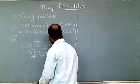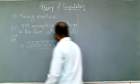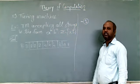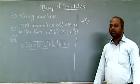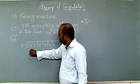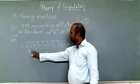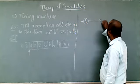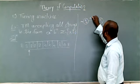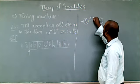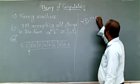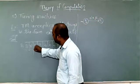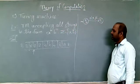The Turing machine always starts at state q0, the initial state. The read-write head is at the first symbol. We are getting a, so we replace this a with x and move right — that is the first transition from q0.